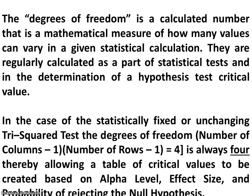What are degrees of freedom? Degrees of freedom is a calculated number that is a mathematical measure of how many values can vary in a given statistical calculation. They are regularly calculated as part of statistical tests and in the determination of a hypothesis test critical value. In the statistically fixed Tri-Squared Test, degrees of freedom will always be the number of columns minus one times the number of rows minus one. Because we have three columns and three rows, it is two times two, or four — always four — thereby allowing a table of critical values to be created based on alpha level, effect size, and the probability of rejecting the null hypothesis.